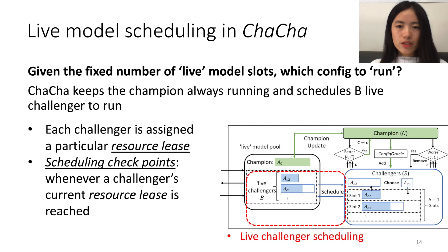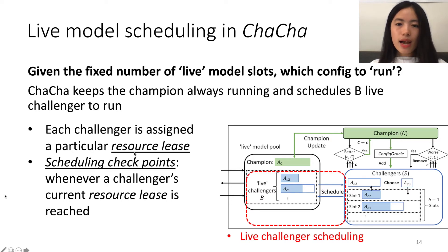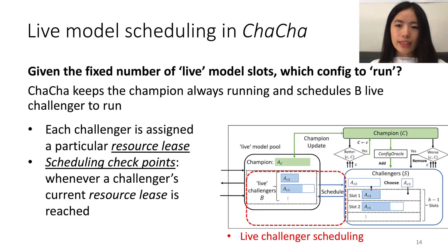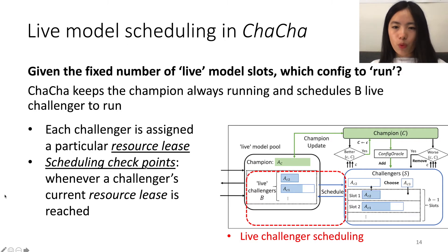In addition to running the Champion, for the rest of the slots, ChaCha schedules a set of Challengers to run. The high-level idea of the scheduling part is to amortize the computation cost by starting from low resource allocation and gradually increasing it. Specifically, we introduce the notion of resource leads for each configuration, which is the amount of resources guaranteed once it is scheduled to run, unless it is identified to be worse than the Champion.